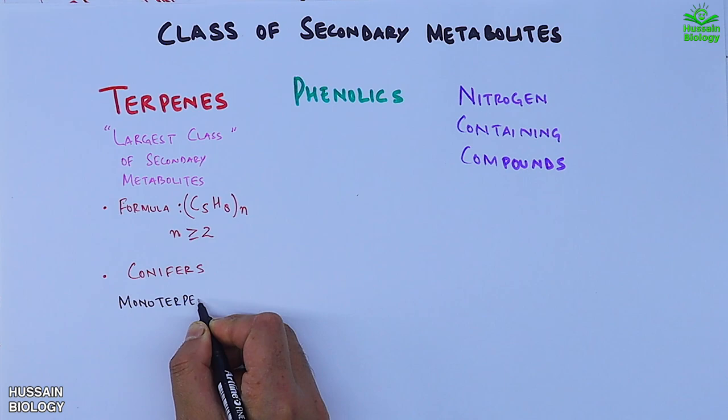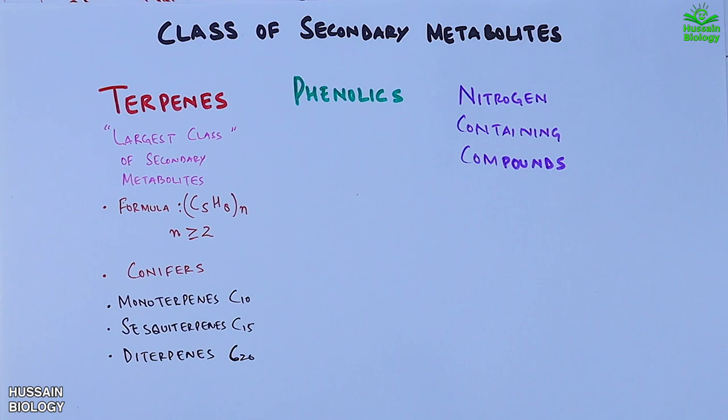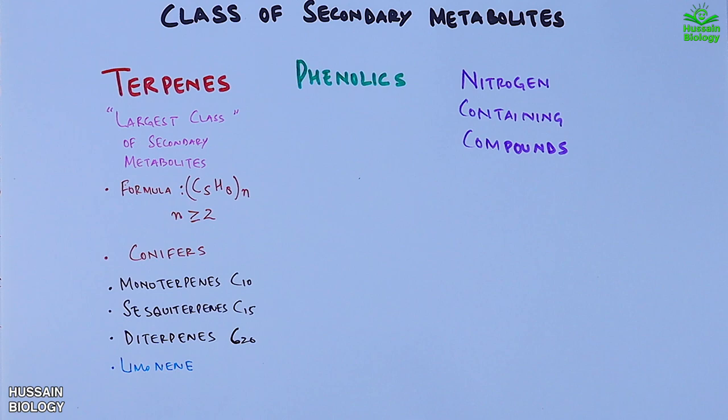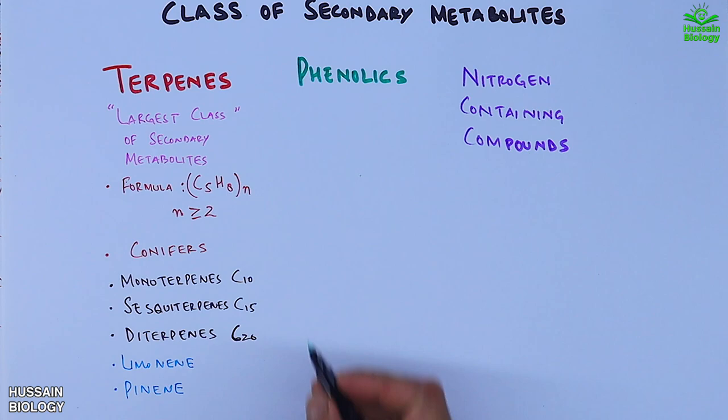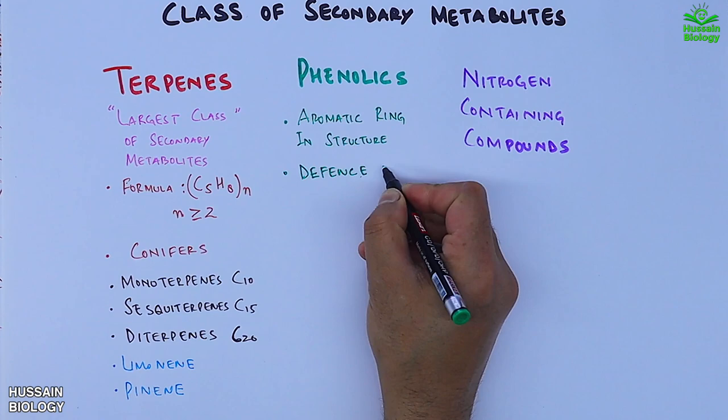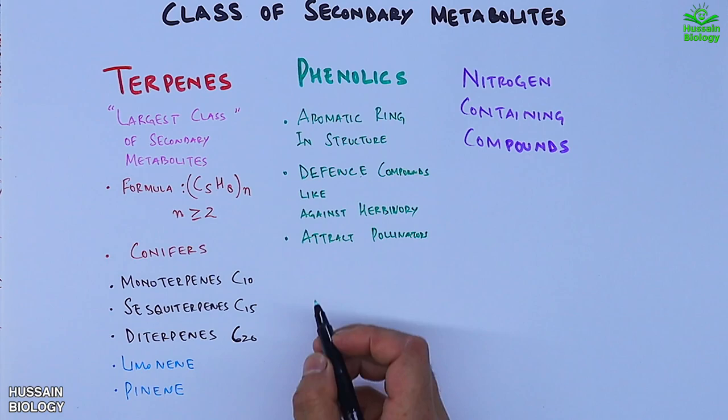Then we have the second class of secondary metabolites which are the phenolics or phenol-containing compounds. These phenolic compounds have aromatic ring in its structure. These compounds are defense compounds in plants like they are used against herbivory. They also function in attracting the pollinators and many more functions.